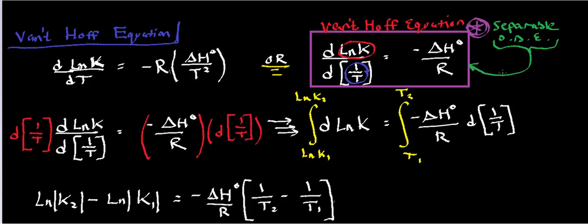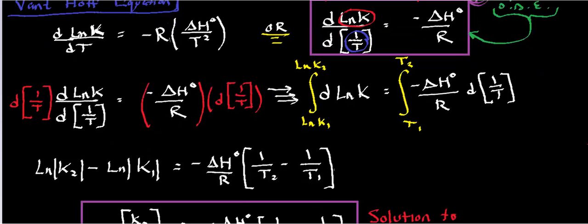Well, what I'm going to do is I'm going to treat this like a normal separable equation. I'm going to multiply both sides by d(1/t). Notice that that cancels here, and I get that the differential of natural log of k equals negative delta H standard over R times the differential of 1 over t.